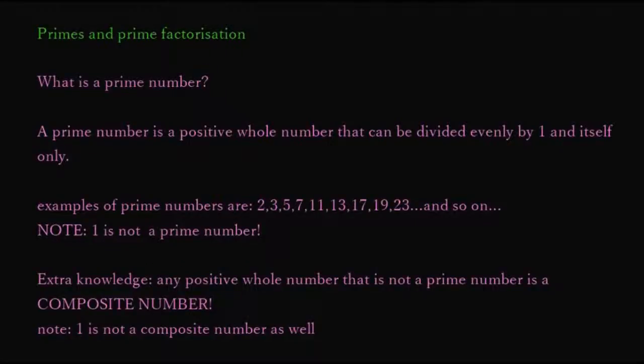What is a prime number? A prime number is a positive whole number that can be divided evenly by 1 and itself only. Examples of prime numbers are 2, 3, 5, 7, 11, 13, 17, 19, 23, and so on.